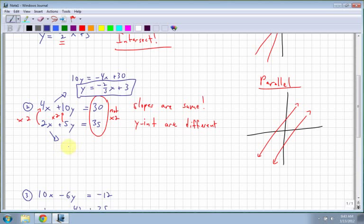Now let's take the second one here. So I'm going to solve for y again. So I get 5y is equal to negative 2x plus 35. Divide by 5, so I get y is equal to negative 2 fifths x plus 7. Notice now that you can see they have the same slope, negative 2 fifths, but they have a different y-intercept.